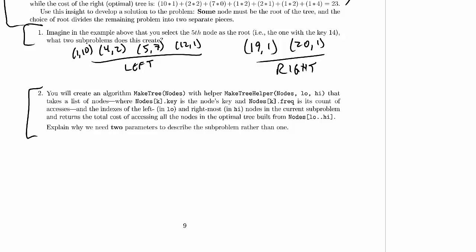You will create an algorithm makeTreeOfNodes with helper makeTreeOfNodes low, high, that takes a list of nodes where the kth object in this nodes array has a key field, which is the node's key, and a freq, short for frequency field, which is its count of accesses. So we're given that array of nodes.